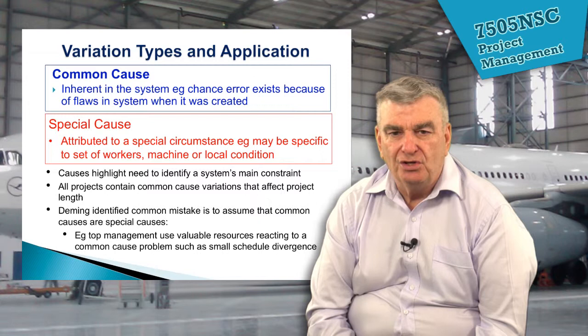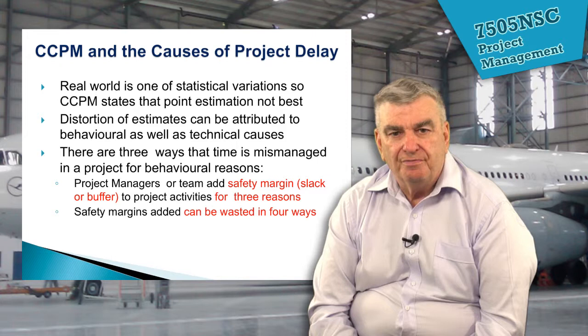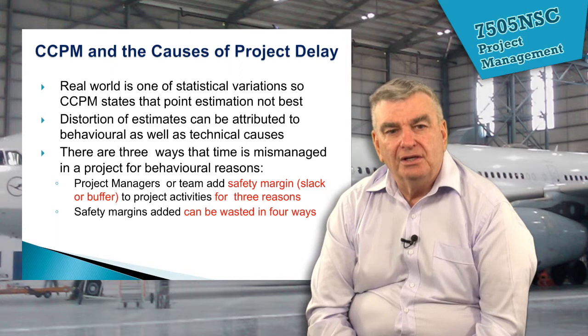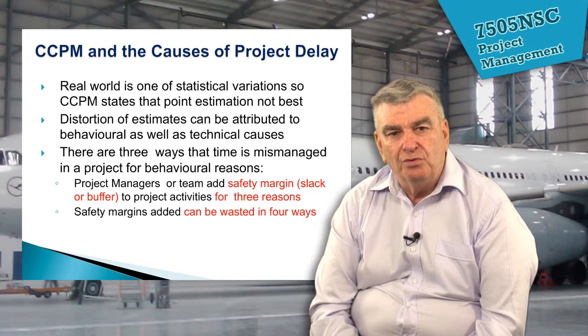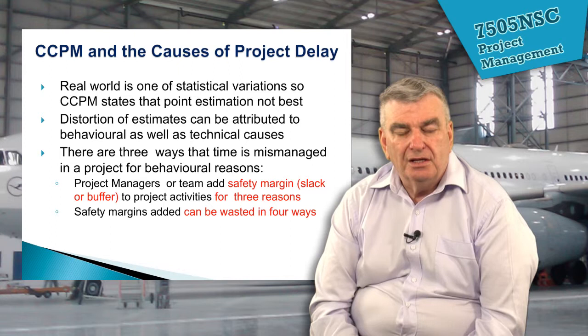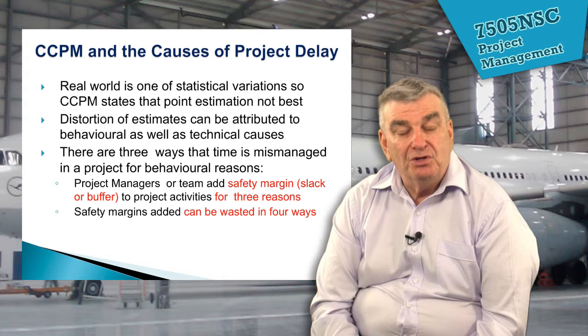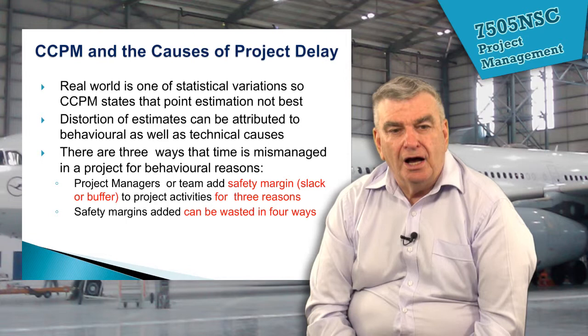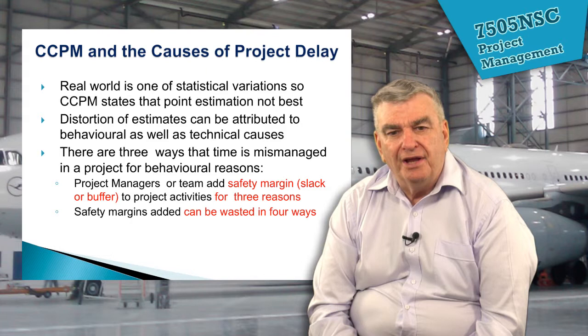With critical chain project management there are a number of issues we have to recognise that can cause project delays. First, we operate in a real world where we get statistical variations — chance variations that are simply a fact of life. The other thing is that estimates can be distorted by a whole range of reasons, not just technical but simply the way in which people go about doing their tasks. Finally, there are three ways in which time can be mismanaged on a project for behavioural reasons, and project managers or teams often add a safety margin in.